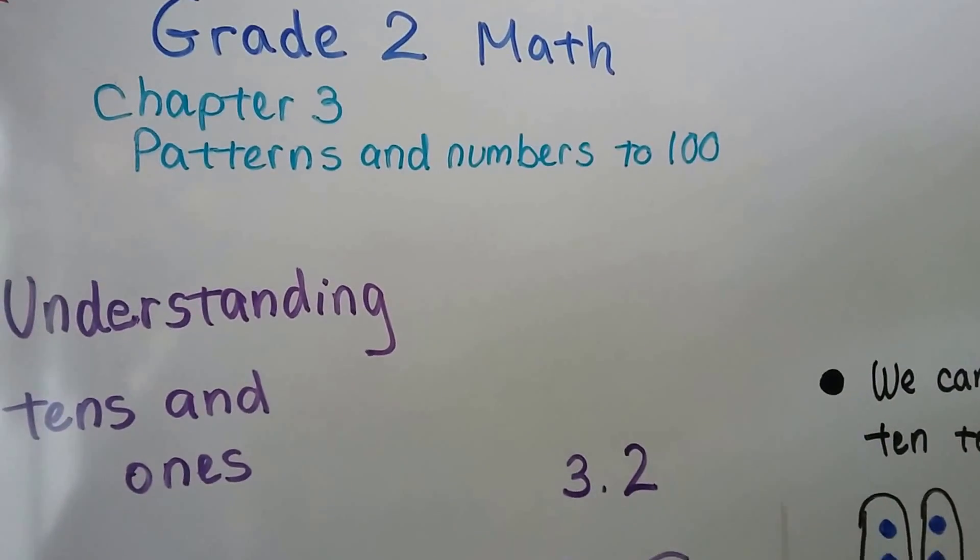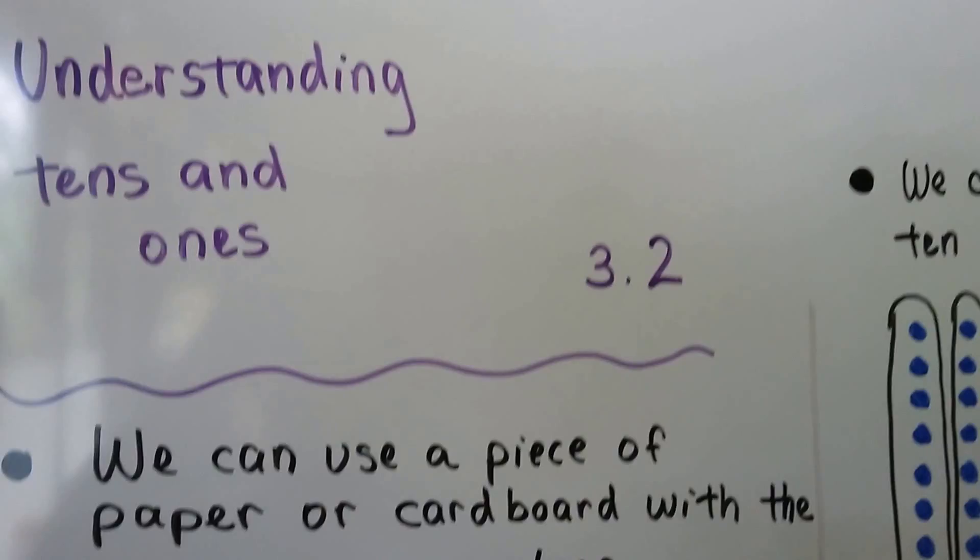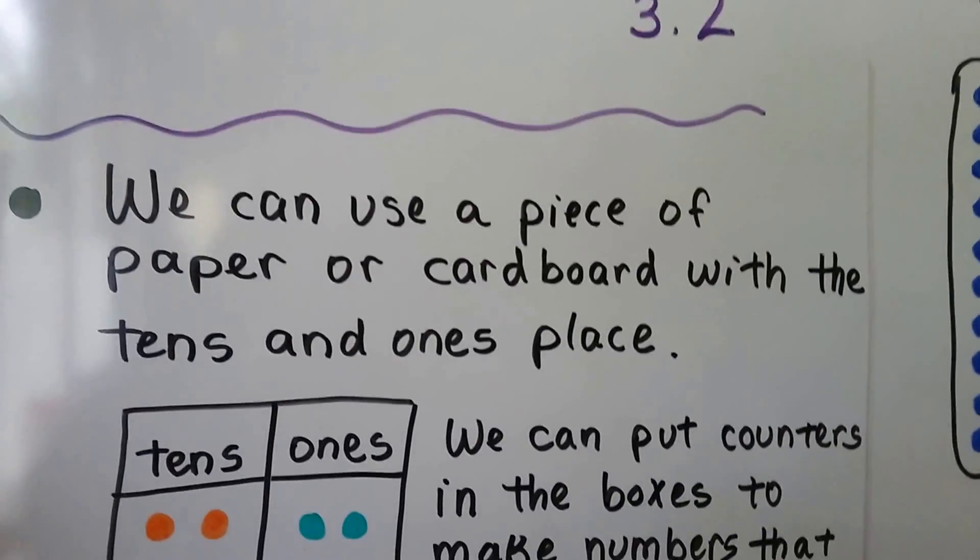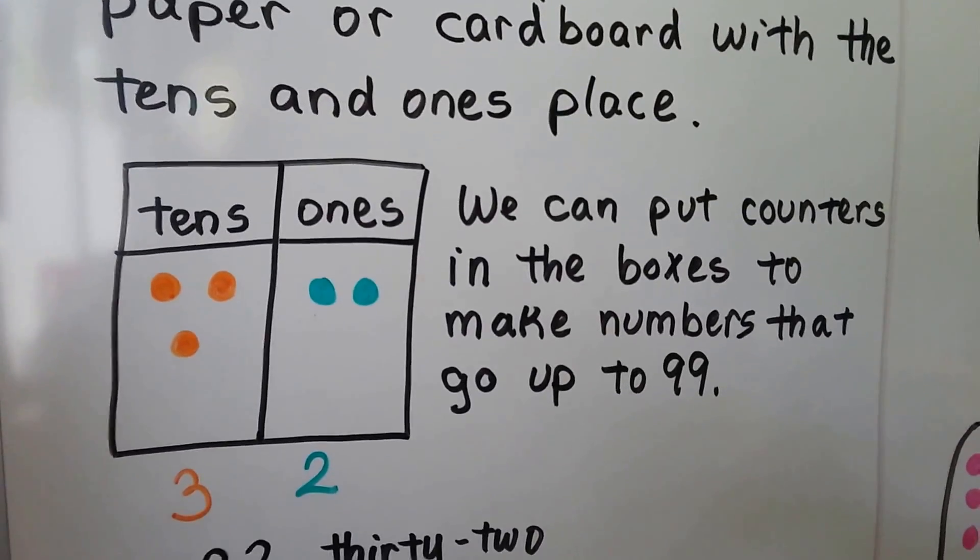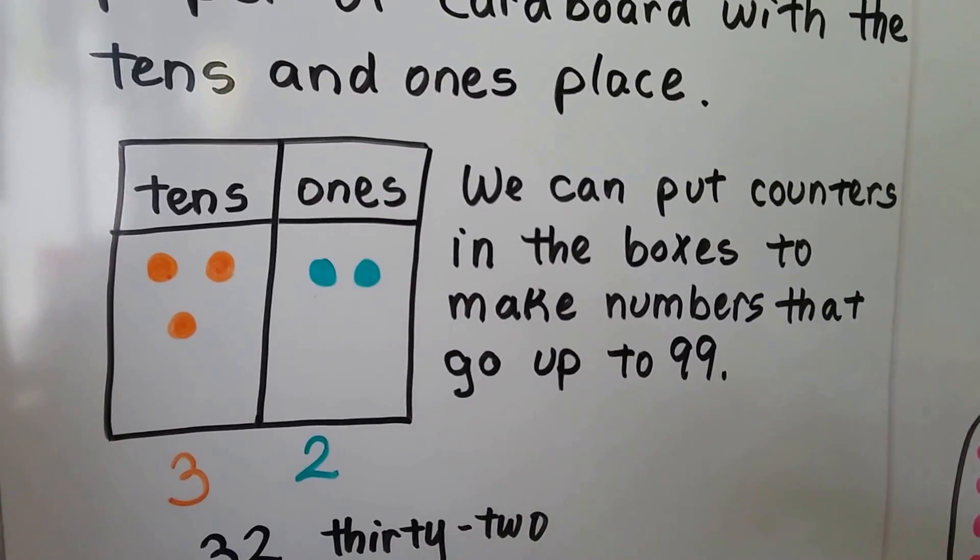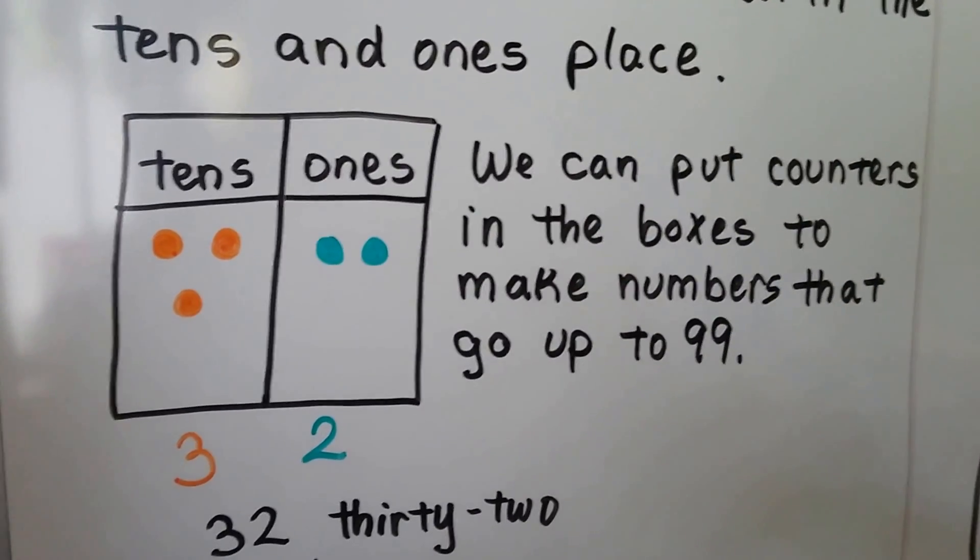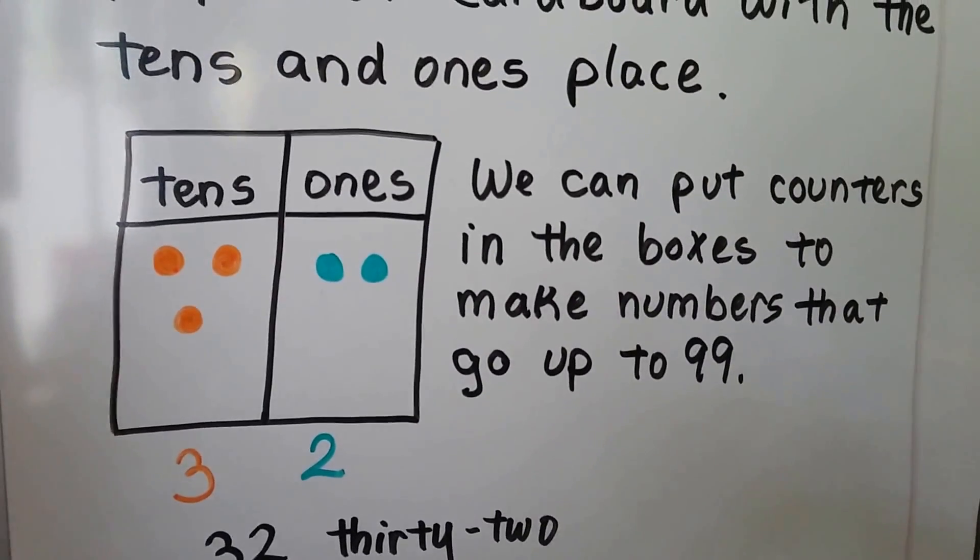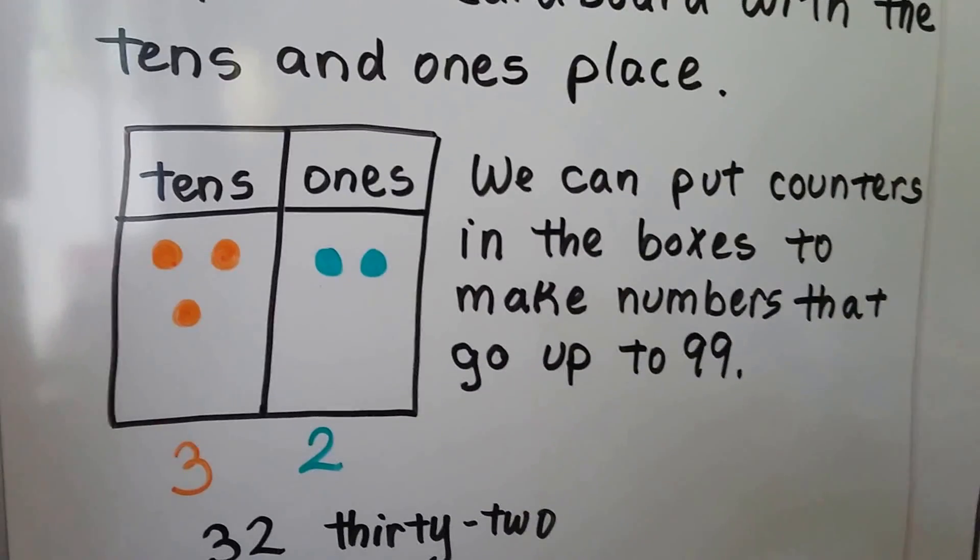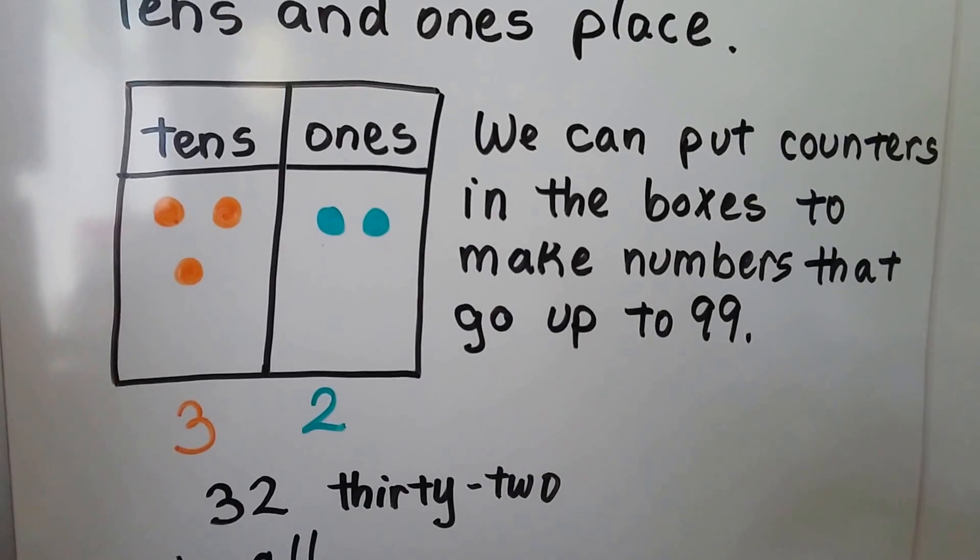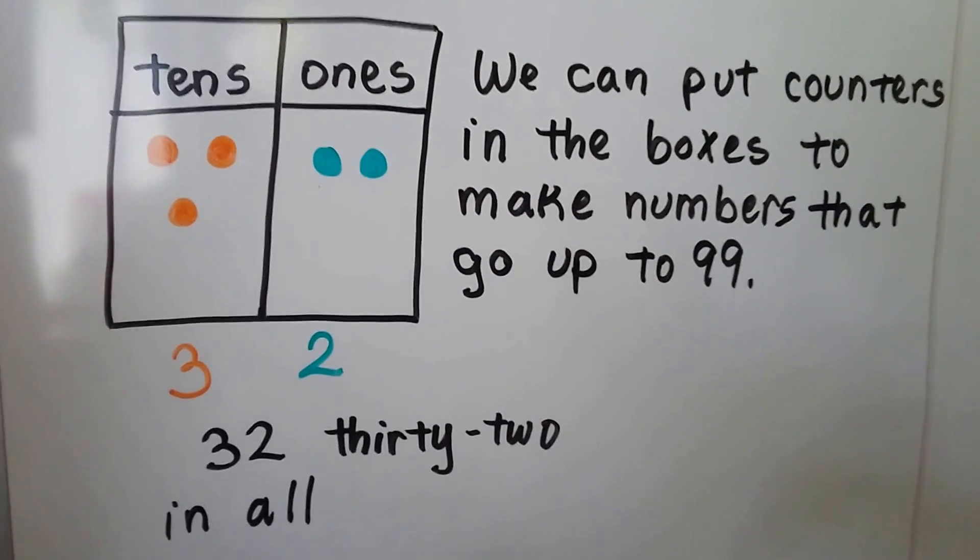Understanding tens and ones. We can use a piece of paper or cardboard with the tens and ones place. We can put counters in the boxes to make numbers that go up to 99. Here we have three counters in the tens box and two counters in the ones box. That would be three tens and two ones, which is 32 in all.